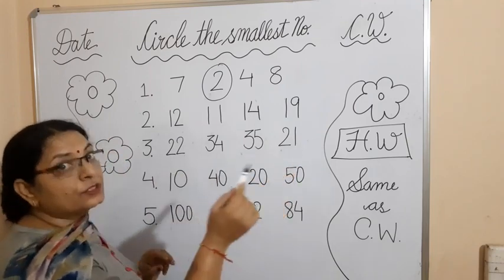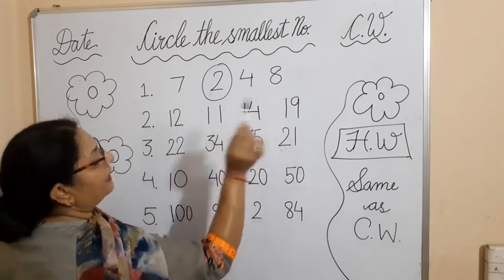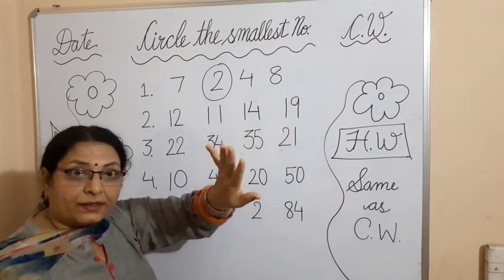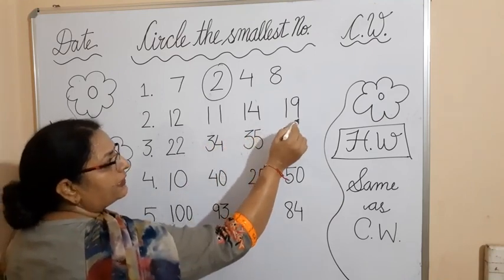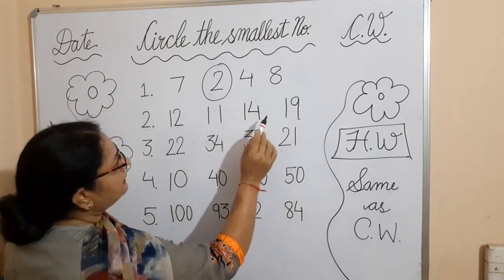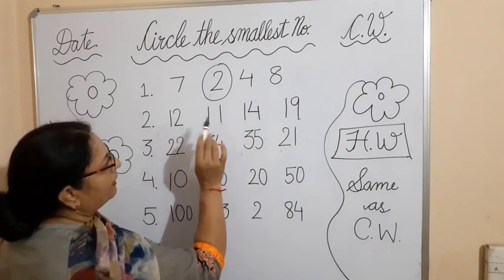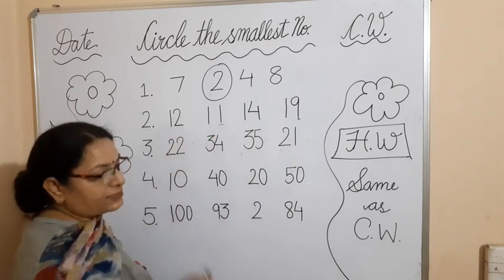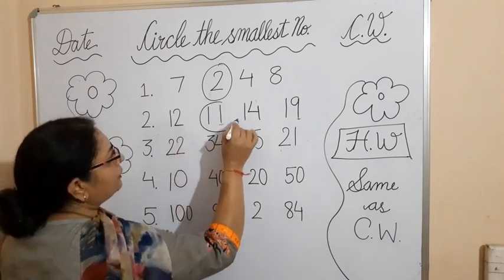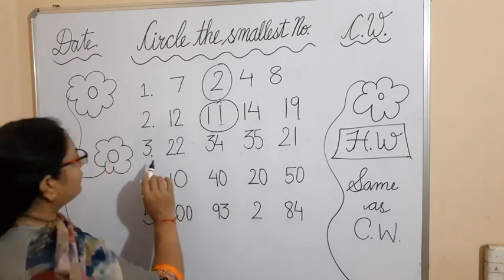Since all the tens are the same, go to the ones place and compare: 2, 1, 4, and 9. We know 19 is the largest because 9 is greater than all the other ones digits. Then 9 is greater than 4, 4 is greater than 2, and 2 is greater than 1. So 1 comes first, meaning 11 is the smallest number and you have to make the circle here.